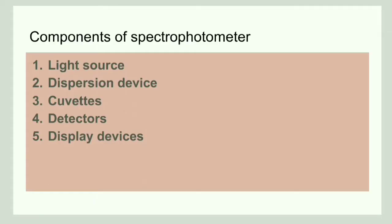Now let us discuss the components of a spectrophotometer. It has a light source, a dispersion device, circuits, detectors, and a display device.